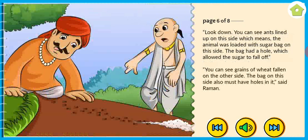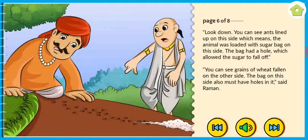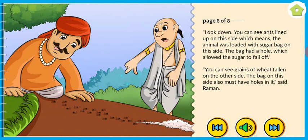'Look down. You can see ants lined up on this side, which means the animal was loaded with a sugar bag on this side. The bag had a hole which allowed the sugar to fall off. You can see grains of wheat fallen on the other side. The bag on this side also must have holes in it,' said Raman.